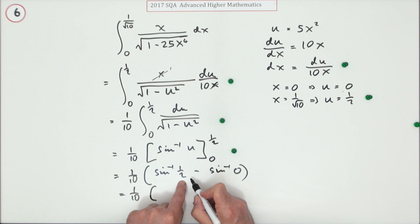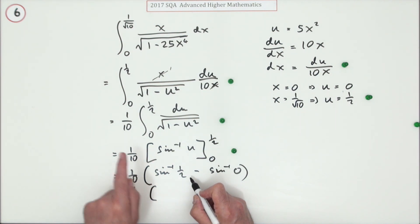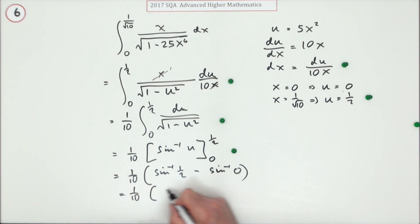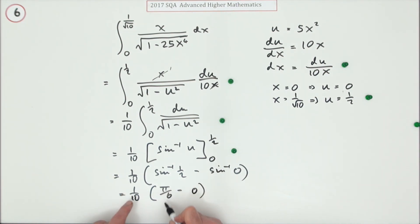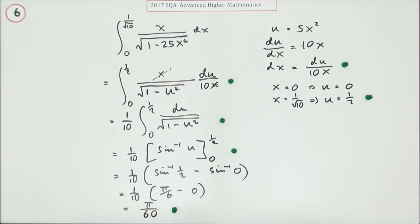A half came from 30 degrees, which is π over 6; zero came from zero. So you've got π over 60 for your exact answer — not a decimal, find the exact answer.